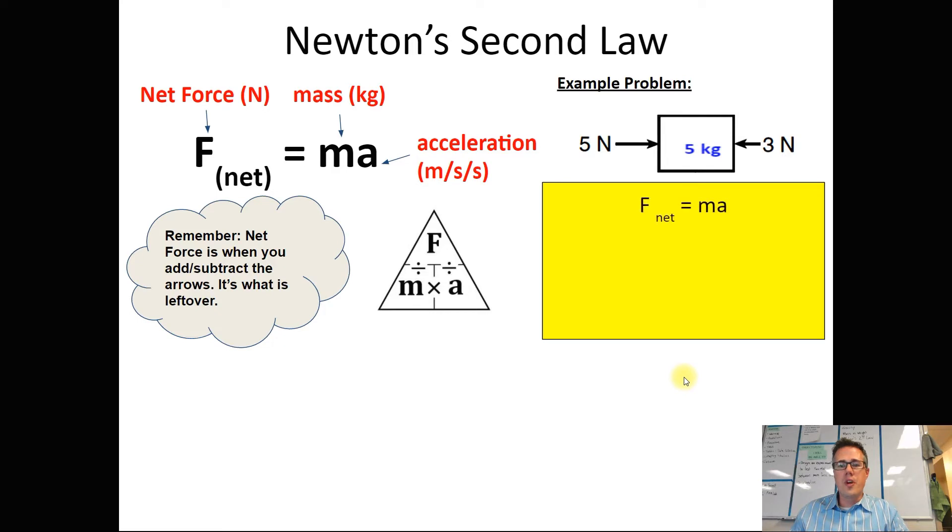So now let's solve. We're of course going to start with our equation, net force equals mass times acceleration. Plugging in the things that we know, net force is when you take everything on one side and subtract everything on the other side. So we have five and three, and our mass is five kilograms. Simplifying this, it works out to two equals five times a.